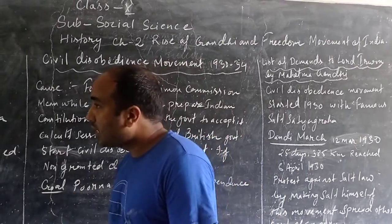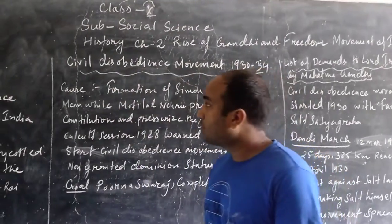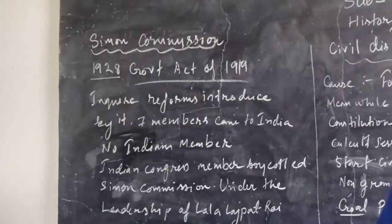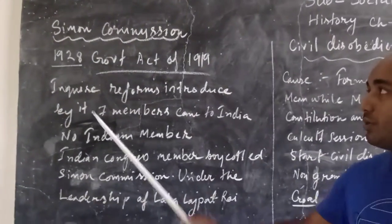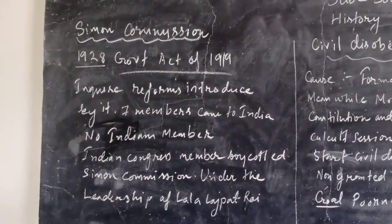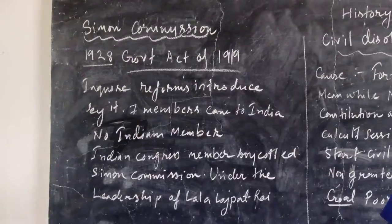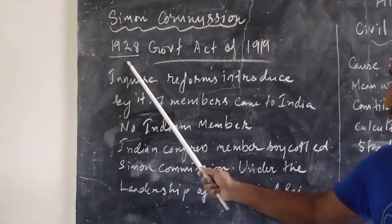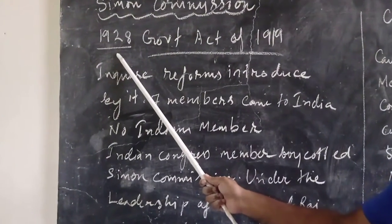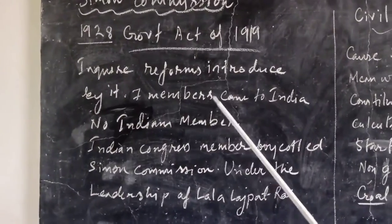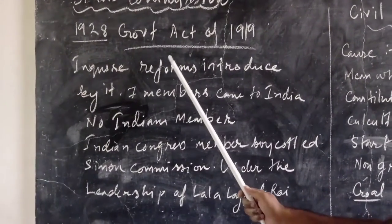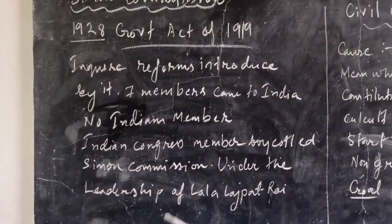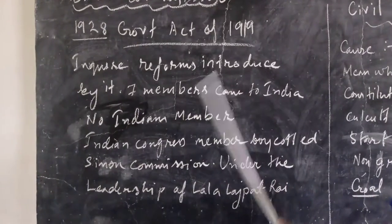In the last class we studied about the Non-Cooperation Movement. Now here we will study about the Simon Commission. What is this Simon Commission? The Simon Commission started in 1928. In the last class we also studied about the Jallianwala Bagh massacre which happened in the year 1919.